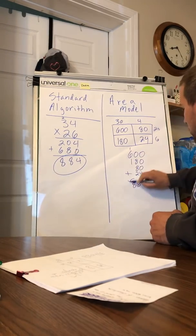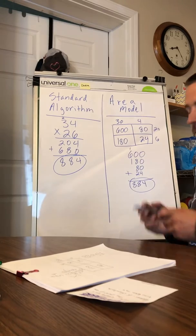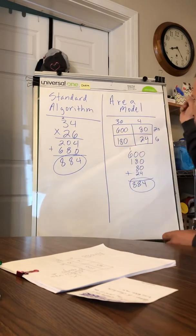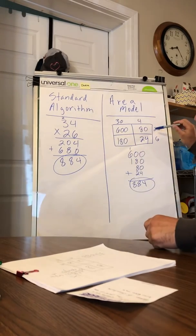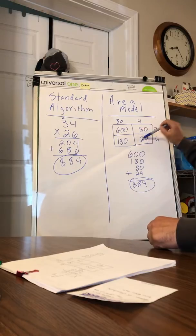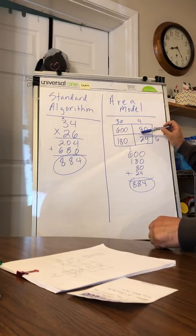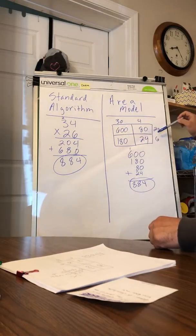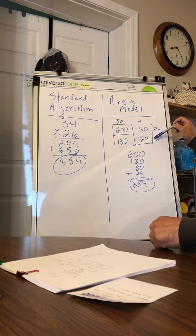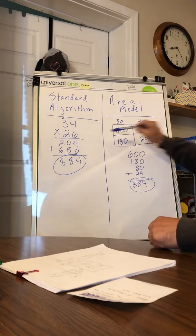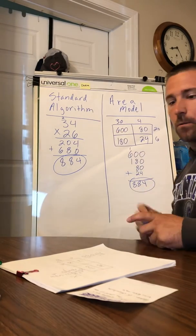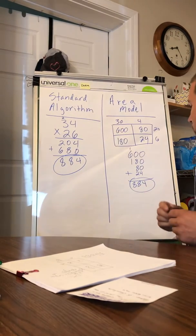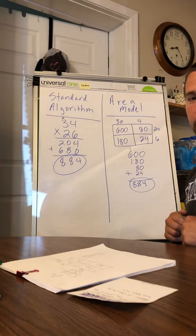And 884 over here. So either strategy works. This one is a little bit more just because you have to set up your area model, but it can be easier because you're breaking the problem apart and it just helps you see how 34 times 26 actually works. So I hope that helps. Check it out. Thanks, bye!